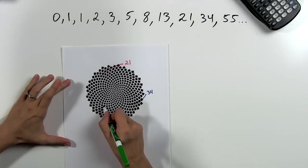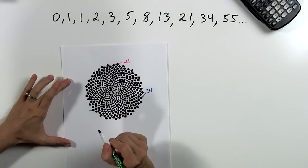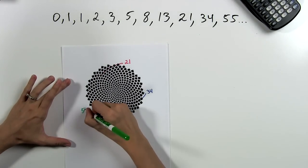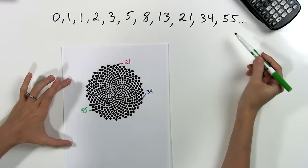Or there's a third way we could count it going this way, in which case we would get 55 total spirals, which is also one of our numbers.